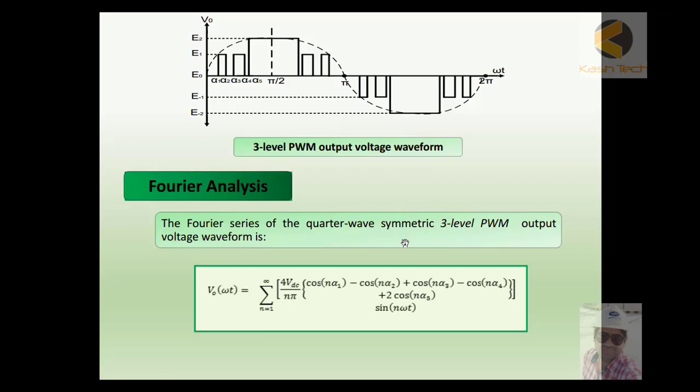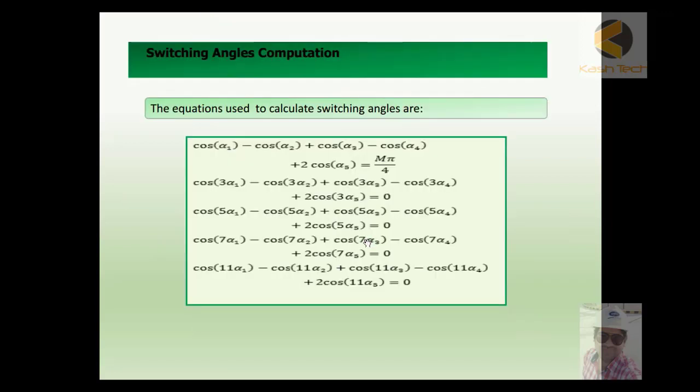If you keep on increasing the level of DCMLI, then the error will be reducing. In this wave, error can be further reduced. This is the switching angle computation that is used for this type of technique.